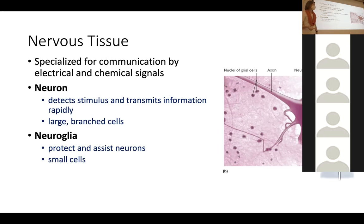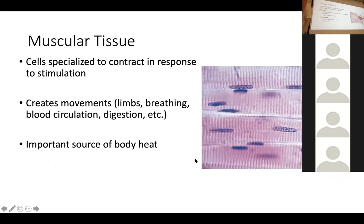Glial cells are small helper cells — there are many more of them than neurons. That's nervous tissue in summary: just as a reminder of what it's all about. Muscle tissue is a tissue type that can contract to create movements — that's its whole purpose. It also uses electrical signals to make that happen. The most obvious movement is us moving our body parts, our limbs — the conscious skeletal muscle movements.